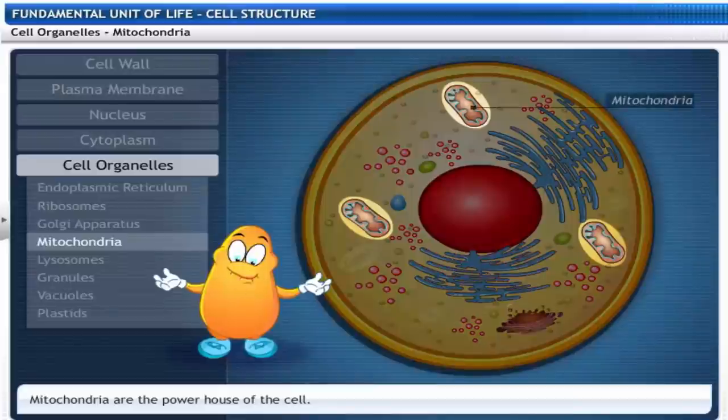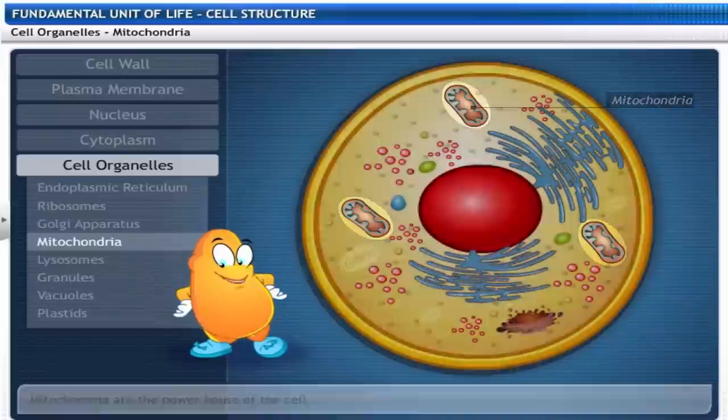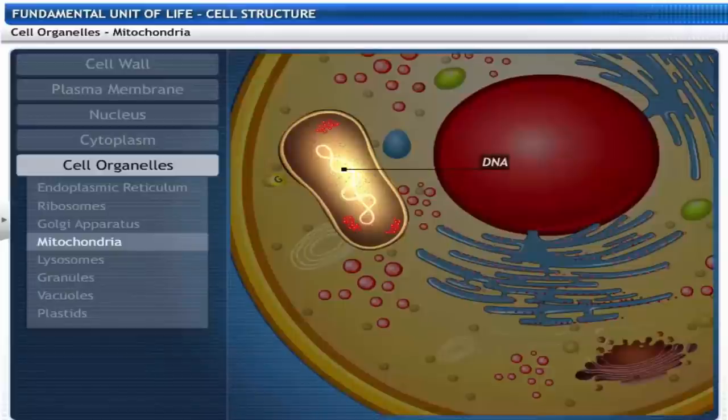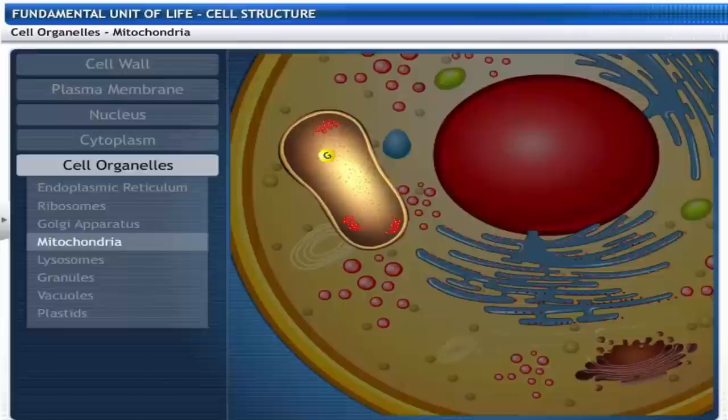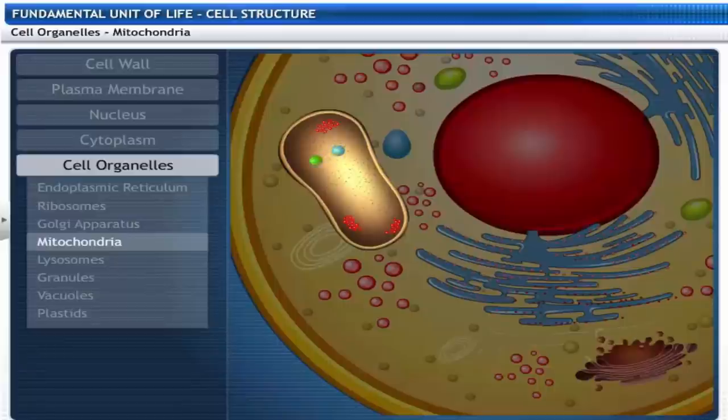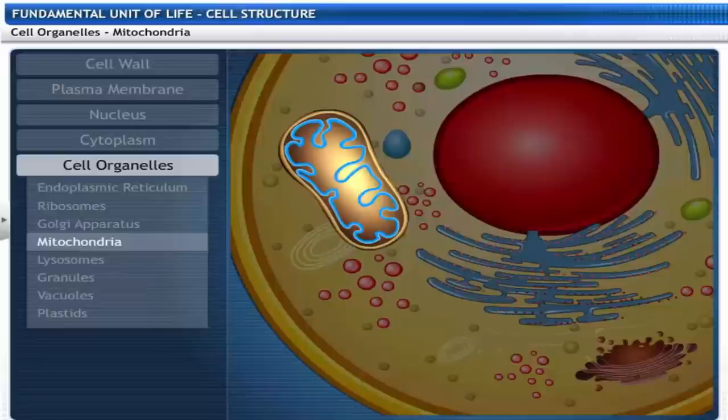This is the powerhouse of the cell called mitochondria. They have their own DNA and ribosomes to synthesize respiratory enzymes. These enzymes oxidize glucose molecules to produce energy in the form of adenosine triphosphate or ATP. This energy is used for chemical activities and mechanical work. Mitochondria have outer and inner membranes. The inner membrane folds into cristae creating more area to make ATP.